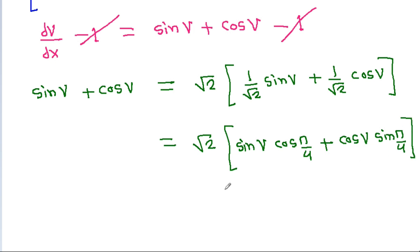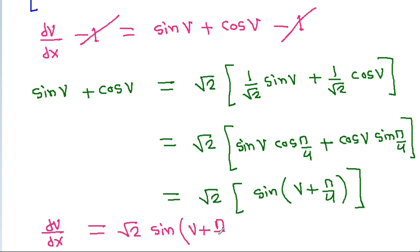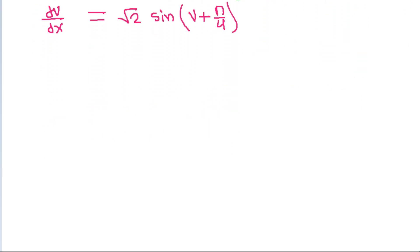Which equals root 2 times sin(v + π/4). So dv/dx is equal to root 2 times sin(v + π/4), and separating variables gives dv divided by sin(v + π/4) equals root 2 dx.